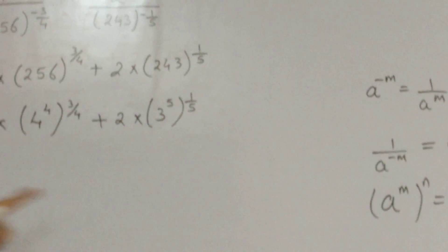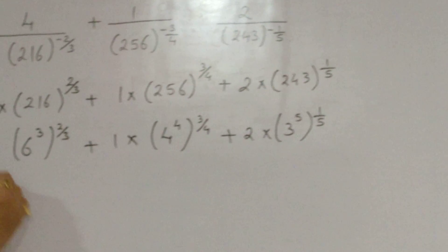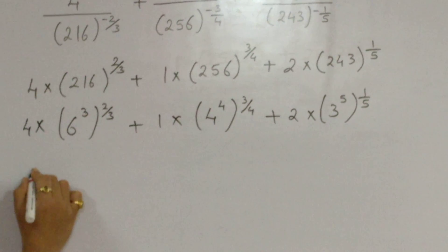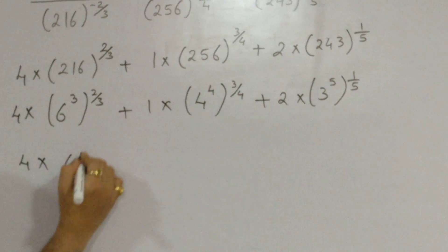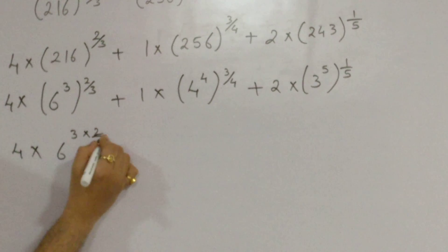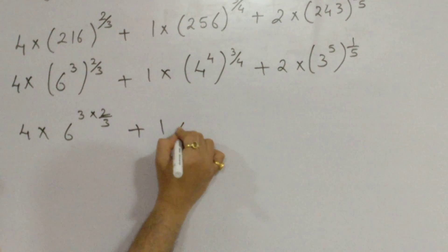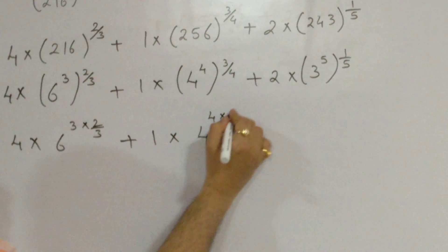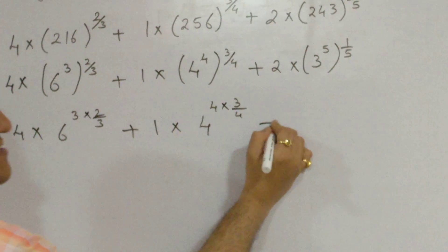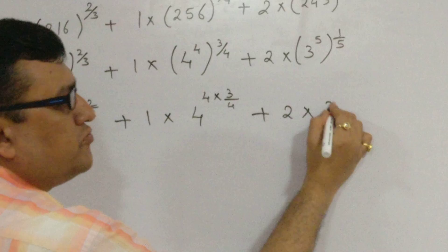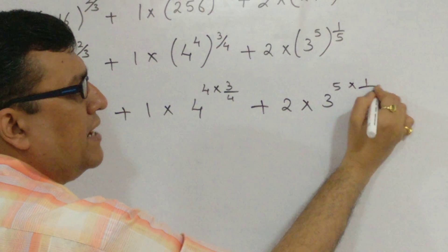Now, it is the time to apply this law over here. When I apply this law over here, the answer turns out to be 4 into 6 raised to 3 into 2 by 3, m into n, plus 1 into 4 raised to 4 into 3 by 4, plus 2 into 3 raised to 5 into 1 by 5.